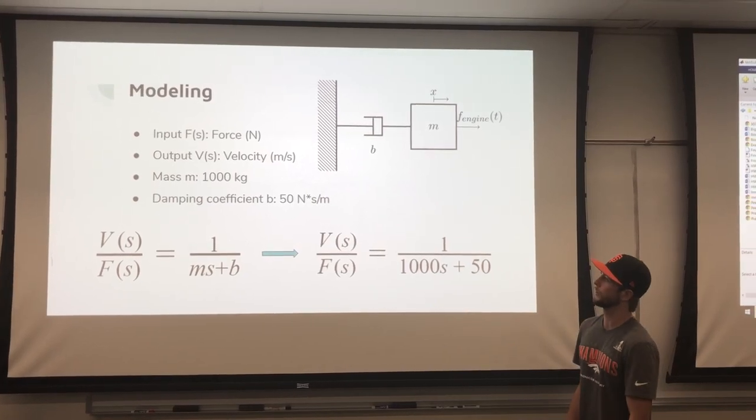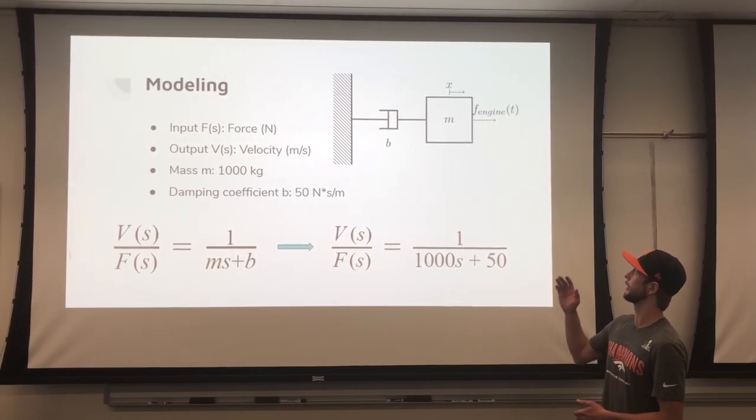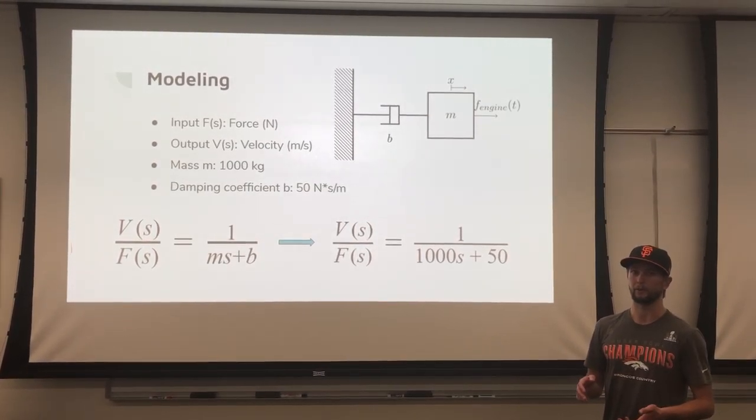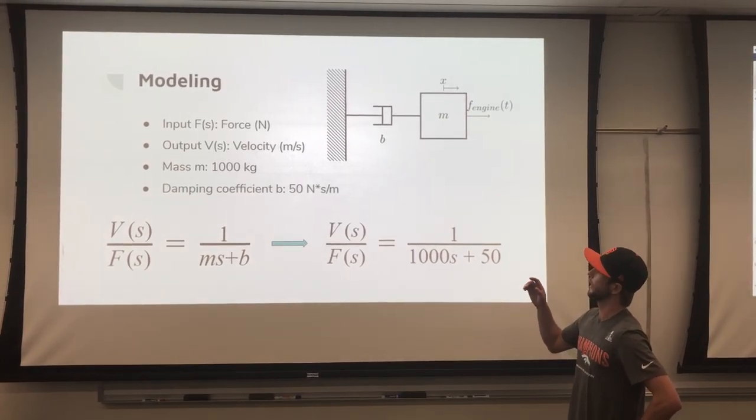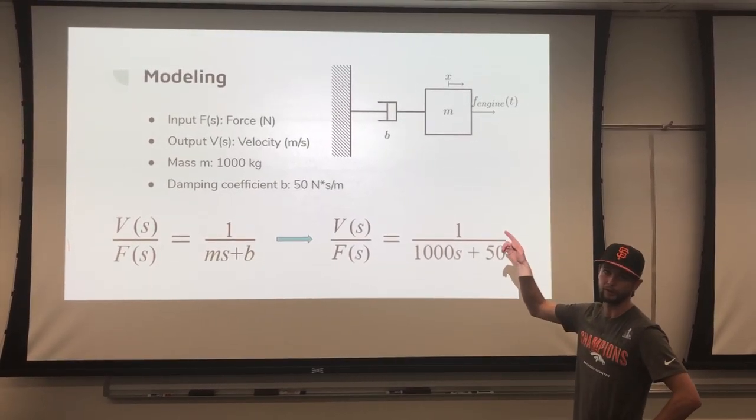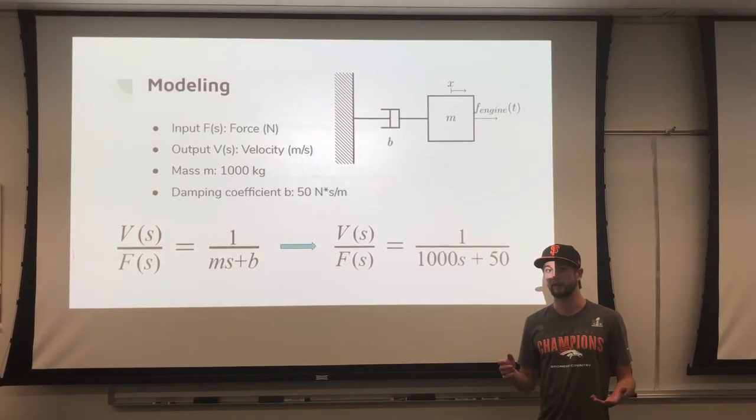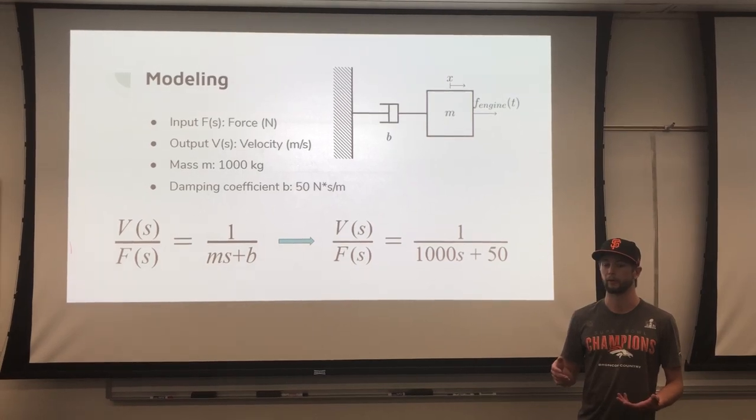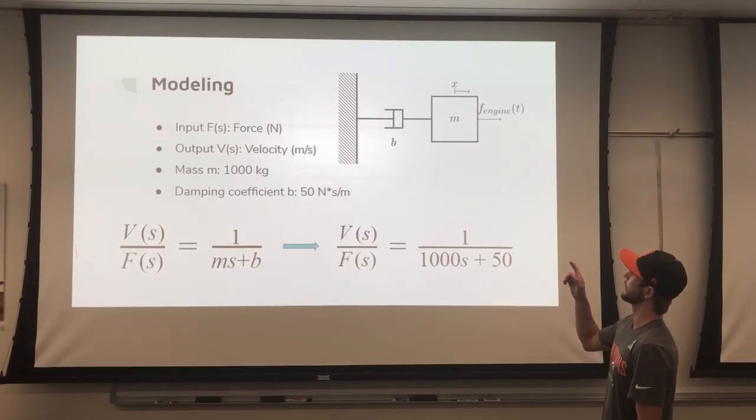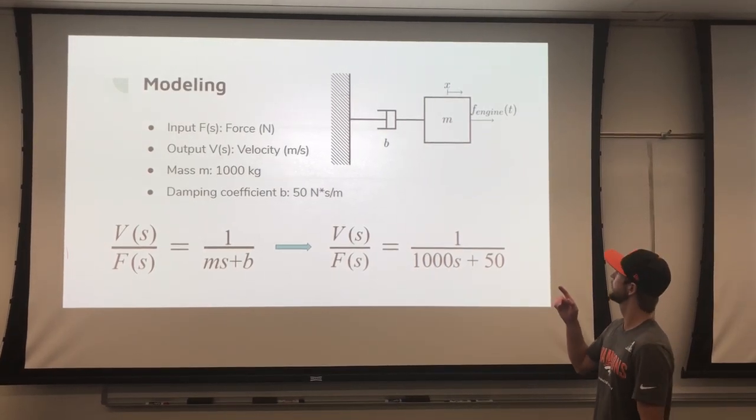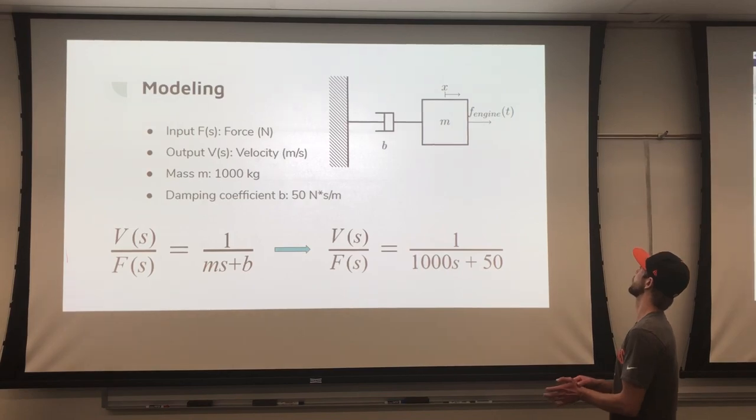When modeling our system, we created a block diagram of our autonomous vehicle. You have a damping coefficient represented by B for air resistance and drag force, the mass which is what moves, and the force of the engine.